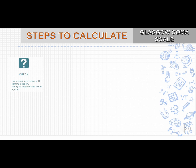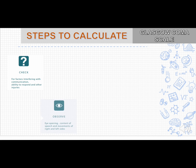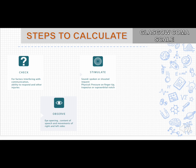GCS steps to calculate: First, check for any interfering factors such as trauma, injuries, or intubation. Second, observe the patient's responsiveness for eye opening, speech, and movements. If not responsive, give stimuli — third step — either verbal stimuli (speak loudly or shout) or painful stimuli at the fingertip, trapezius, or sternal notch. Finally, rate the GCS according to the patient's observed condition.